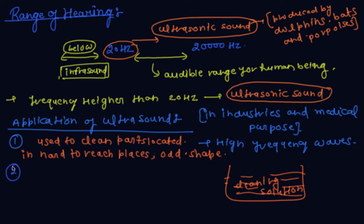Now the second application is to detect cracks and flaws in metal blocks. Generally, metallic components are used in construction of big structures like buildings, bridges, machines and also for scientific components. The cracks are invisible from outside, reduces the strength of structure. So ultrasonic waves are allowed to pass through the metal block and detectors are used to detect the transmitting waves.